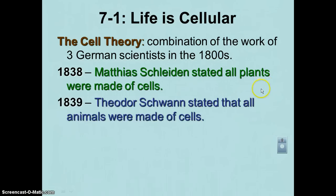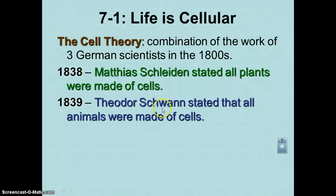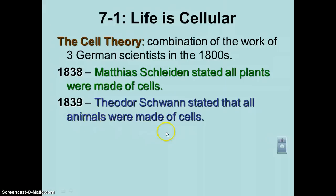A year later, another German scientist named Theodor Schwann stated that all animals were made out of cells. He had looked at enough animal tissue and noticed cells in every single one, so he concluded all animals were made up of cells. A great way to remember the difference between these two: Schwann sounds like 'swan,' and swans are animals — so Schwann said animals are all made of cells. For Schleiden, think of sliding on grass — grass is a plant — so Schleiden said all plants are made of cells.